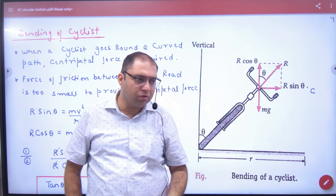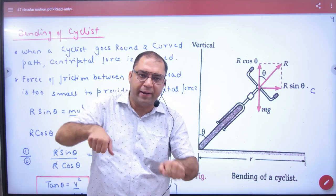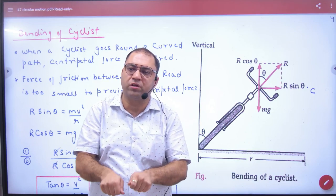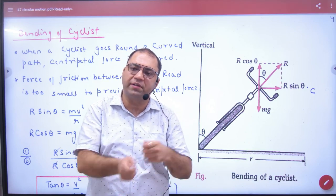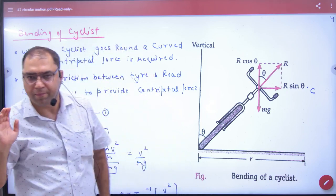And the other thing is bending. Bending is useful because with bending, the normal reaction has a component directed toward the center, which provides the centripetal force.